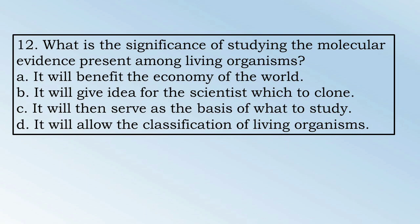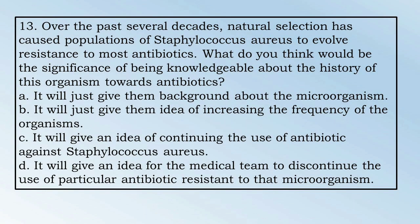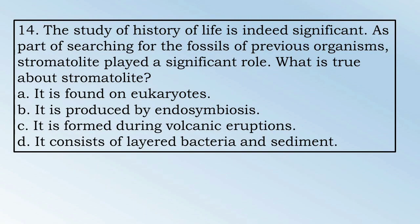Number 13. Over the past several decades, natural selection has caused populations of Staphylococcus aureus to evolve resistance to most antibiotics. What do you think would be the significance of being knowledgeable about the history of this organism towards antibiotics? A. It will just give them background about the microorganism. B. It will just give them idea of increasing the frequency of the organisms. C. It will give an idea of continuing the use of antibiotic against Staphylococcus aureus. Or D. It will give an idea for the medical team to discontinue the use of a particular antibiotic resistant to that microorganism.